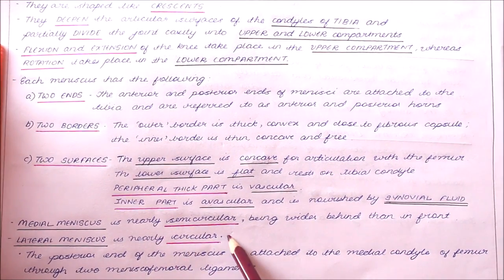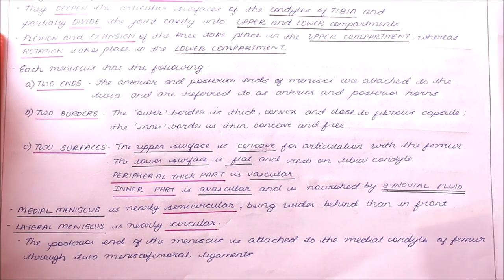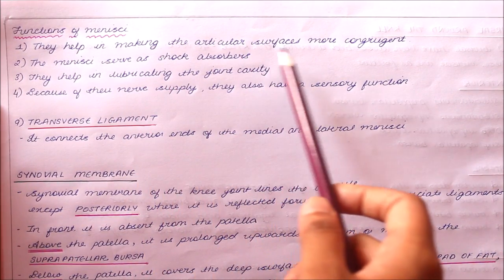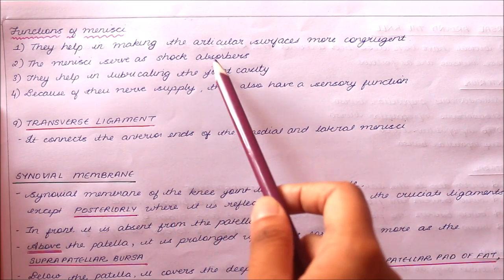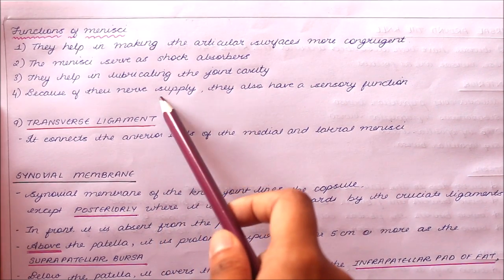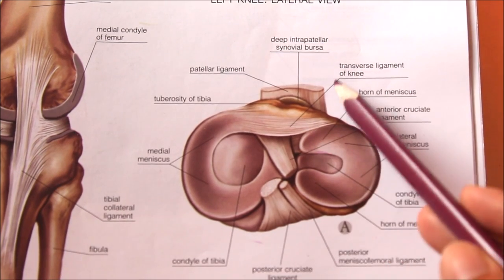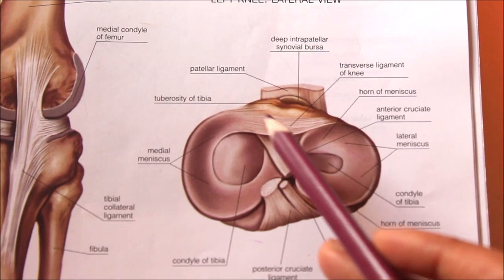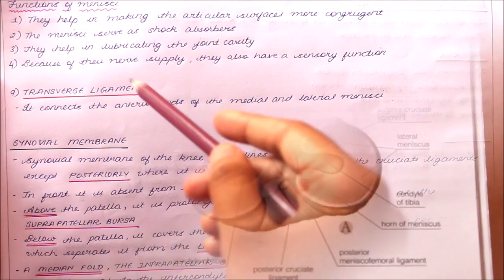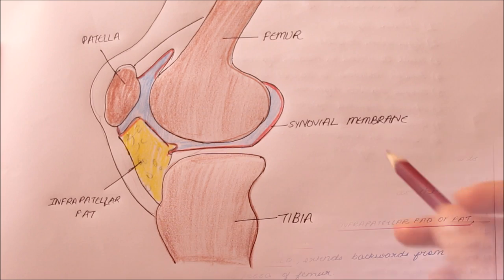The posterior end of the lateral meniscus is attached to the medial condyle of the femur through two meniscofemoral ligaments. The transverse ligament of the knee joint connects the anterior ends of the medial and lateral menisci.